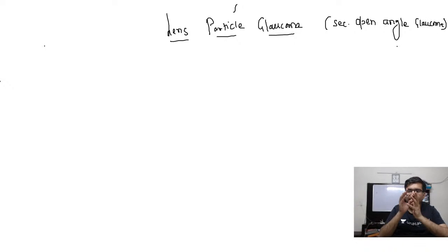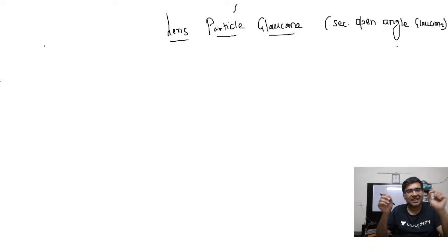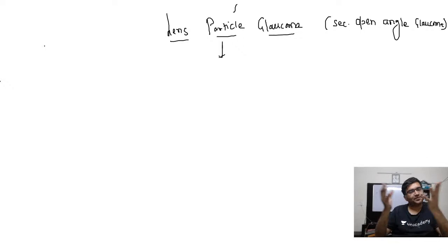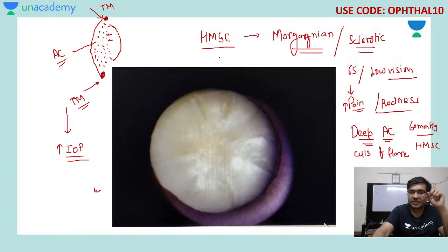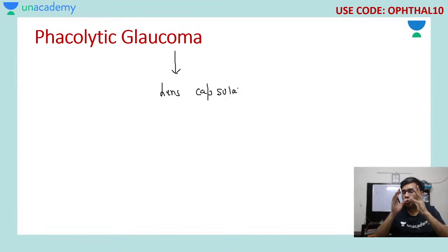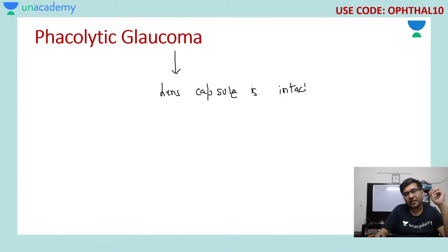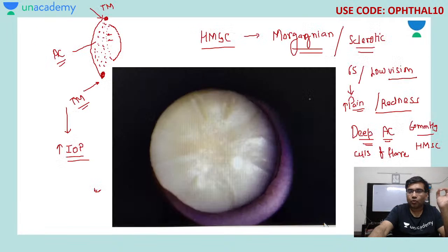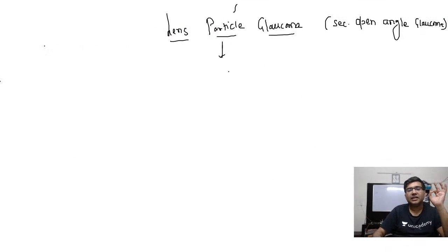In lens particle glaucoma, the intraocular pressure elevation is caused by obstruction of outflow by lens particles. An important distinguishing point: in phacolytic glaucoma, the lens capsule is intact — there is no break in its continuity. In lens particle glaucoma, however, there is a breach in the integrity of the anterior capsule of the crystalline lens.